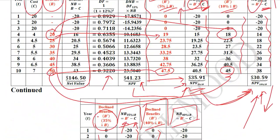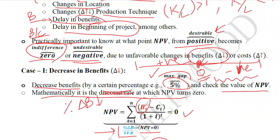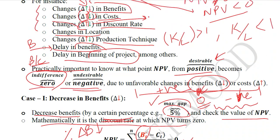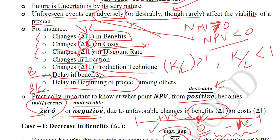In this way we can conduct the sensitivity analysis of a certain project. Here the first case was discussed, in which we introduced an unexpected decline in the benefits and found its switching value. In the next video we will analyze the switching value of costs. Thank you.